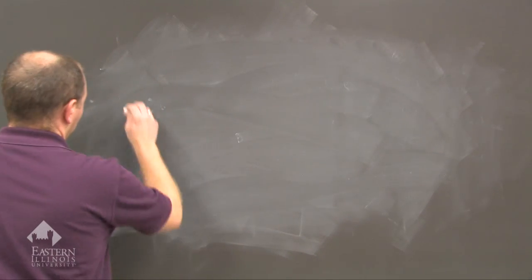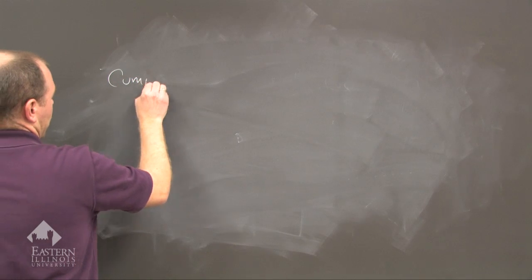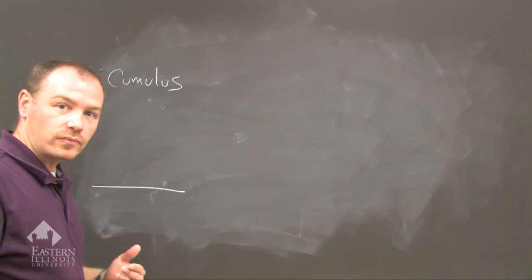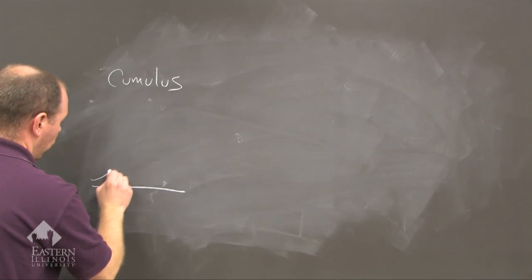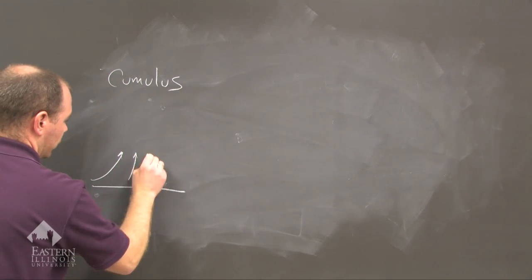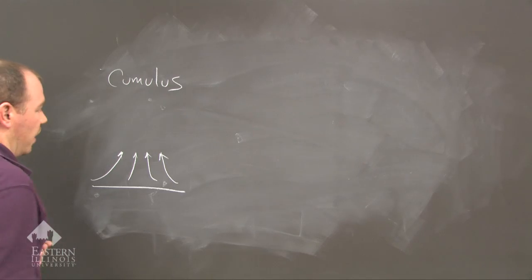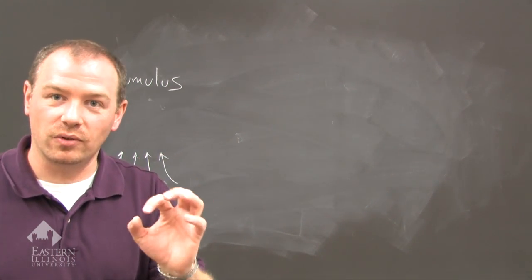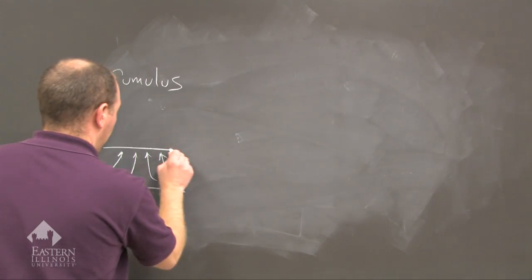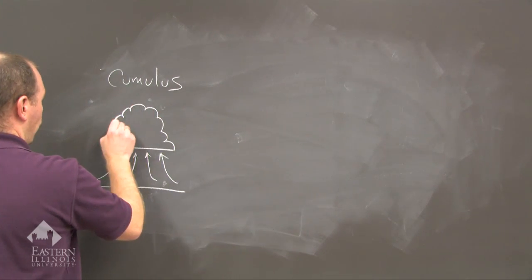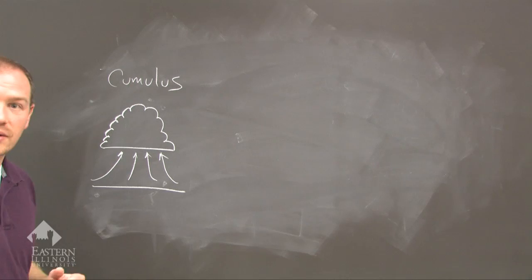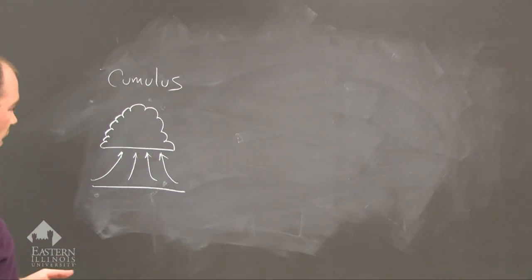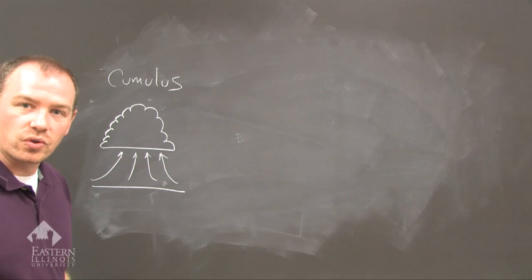The first stage is called the cumulus stage. Here's our surface. What we have is warm, moist air rising, and then once the temperature reaches the dew point, or the dew point reaches the temperature, then we have the formation of a cloud. The moisture condenses to form cloud droplets. This is the cumulus stage, the first stage to thunderstorm development.